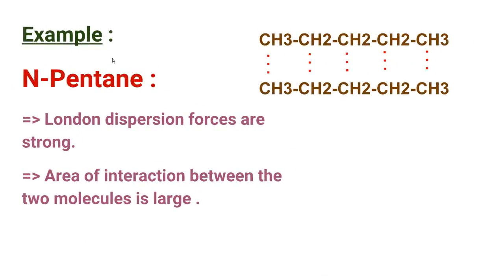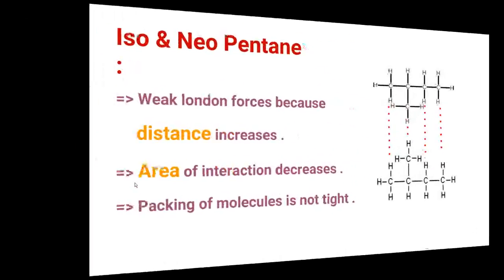Now this is an example, this is normal pentane. As you can see here five carbons are joined together, so this is normal pentane and these red dots are indicating van der Waals forces or the London dispersion forces. Students, the London dispersion forces are strong because the molecules are close together. So the area of interaction between the two molecules is large.